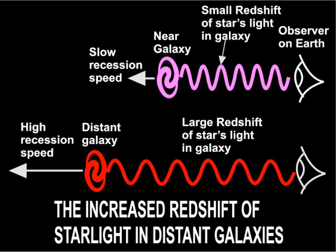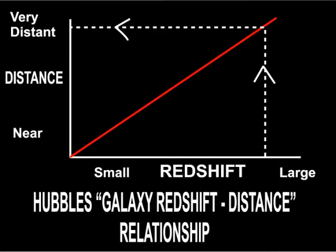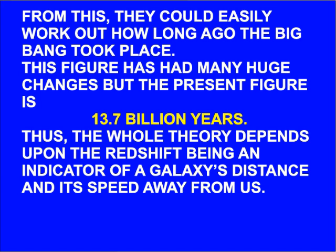The faster the galaxy moves away from us, the greater the redshift of particular lines in their spectrum. From the amount of change, astronomers can tell how fast a particular galaxy is travelling away from us, and Hubble found a relationship between the distance a galaxy is from us and its redshift. From this they could easily work out how long ago the Big Bang took place. This figure has had many huge changes, but the present figure is 13.7 billion years. Thus the whole theory depends upon the redshift being an indicator of a galaxy's distance and its speed away from us.